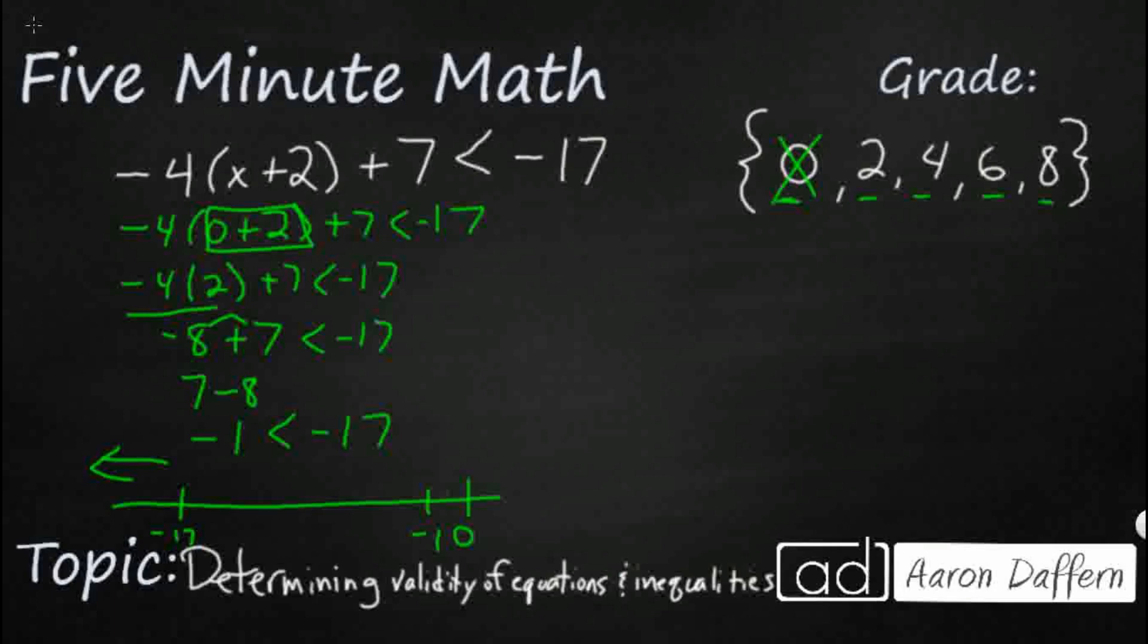Let's see what happens when we plug in 2. So we're going to do that same thing. So negative 4, let's do a 2 plus 2 plus 7 is less than negative 17. So we're going to combine this to 4. So negative 4 times 4 plus 7. And so that's going to get us a negative 16 plus 7. And so we've got this negative 16. That's really the same as 7 minus 16. So that is going to be a minus 9.